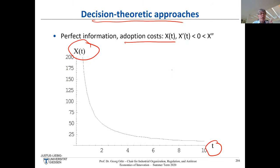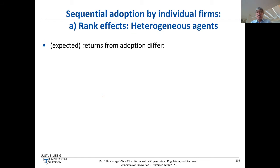Now we address the question: when should you buy your new computer? We start with the adoption decision of a single firm that must account for decreasing adoption costs. We have potentially heterogeneous agents — called the 'rank effects model' by Casheners and Stoneman. Firms have some expected returns from adoption and may differ in size, R&D expenditures, and market shares.